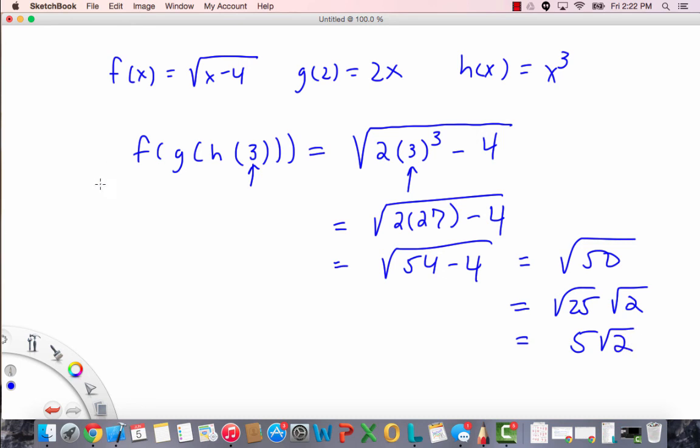And the other way to solve this is to find h(3), which is simply found by subbing in 3 for x. So h(3) is 3 cubed, which is 27. Then we need to find g of h cubed, working inside out, as I mentioned. So this is g(27) by substitution. g(27) is found, actually this should have been an x, sorry about that. g(27) is 2 times 27, which is 54.